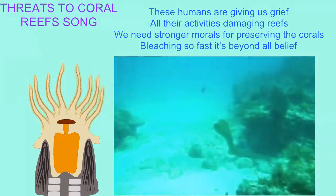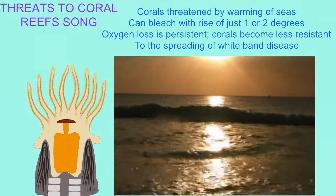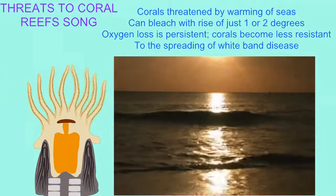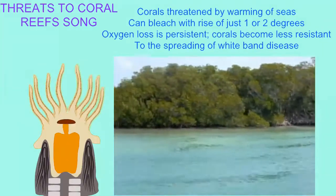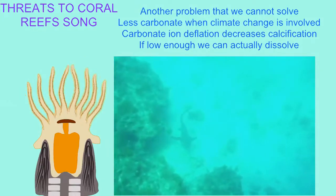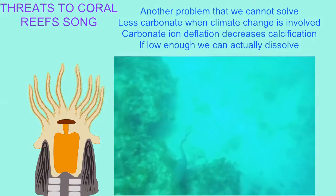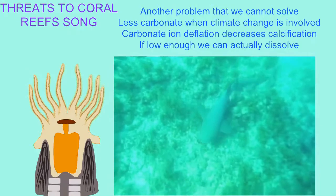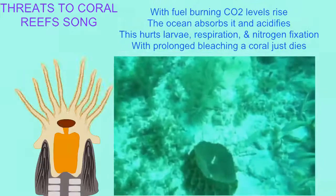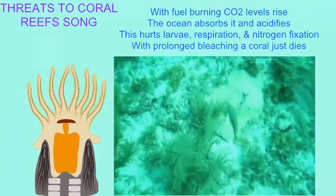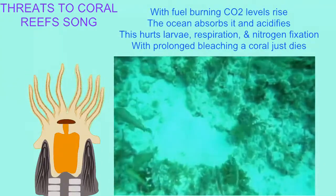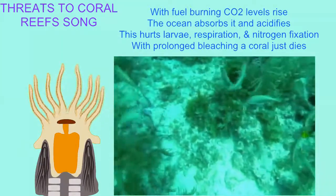Thus, the ocean's acidity has increased 30% as this carbon dioxide became carbonic acid, causing the pH of the ocean to drop from 8.2 to 8.1. That might not seem like a lot, but the pH scale is a logarithmic scale. By the year 2100, it is feared that the ocean's pH could decrease to 7.8 if humanity continues emissions at current levels, which would threaten a mass extinction of many marine organisms.